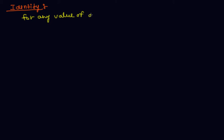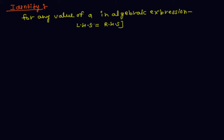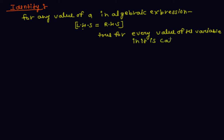What is identity? For any value of A in an algebraic expression, if the left hand side is equal to the right hand side and it is true for every value of the variable, then it is called an identity.